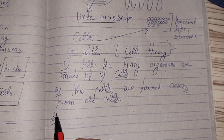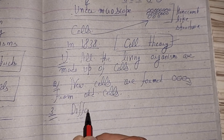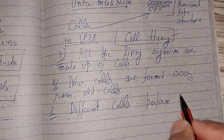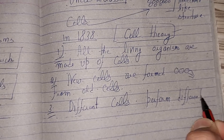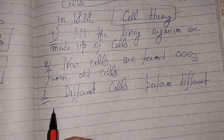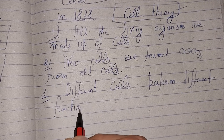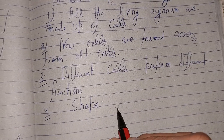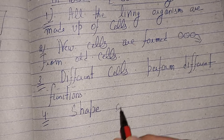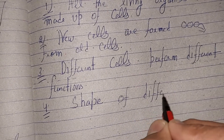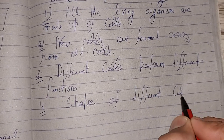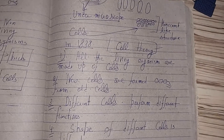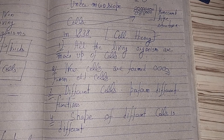Different cells in the human body perform different functions. Like cells of blood perform a different function and cells of the heart perform a different function. The shape of cells is also different — the shape of muscle cells is different from the shape of heart cells.